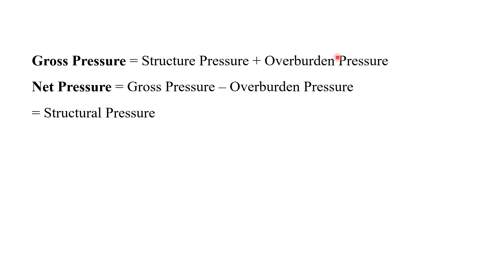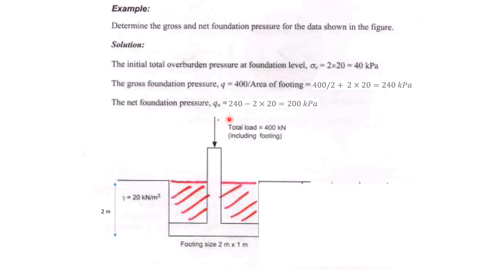Two important terminologies: gross pressure and net pressure. Gross pressure means structure pressure plus overburden pressure. If we subtract the overburden pressure from the gross pressure, we get the net pressure, which is only the structural pressure.